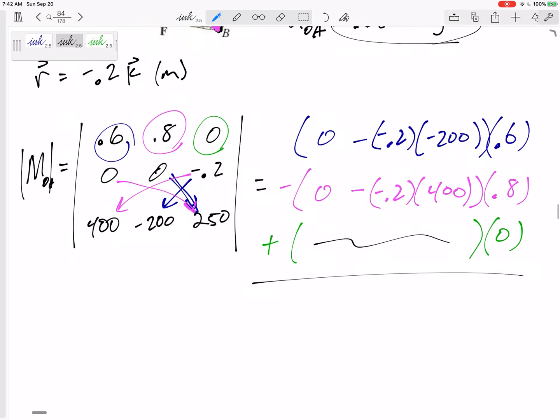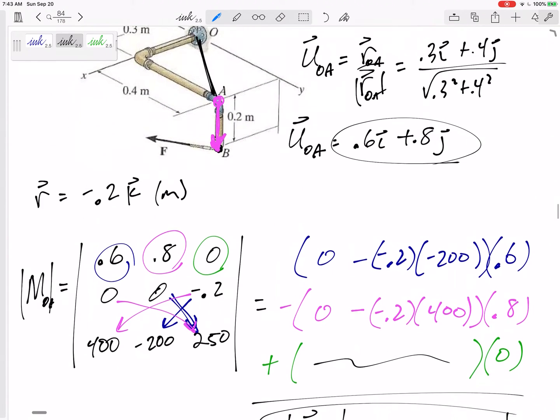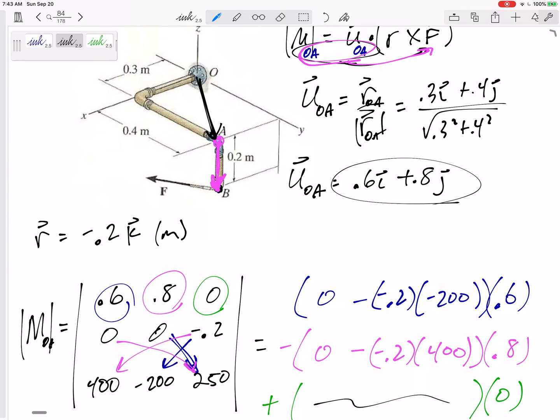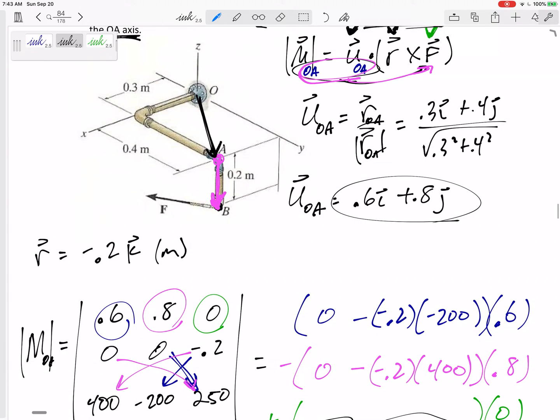We would get that the magnitude of the moment about the OA axis is negative 88. It came out negative, but this isn't really an absolute value per se, it just tells me magnitude. This negative just means it is not rotating about the OA axis in the expected direction.